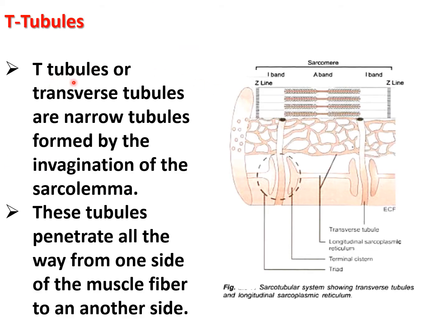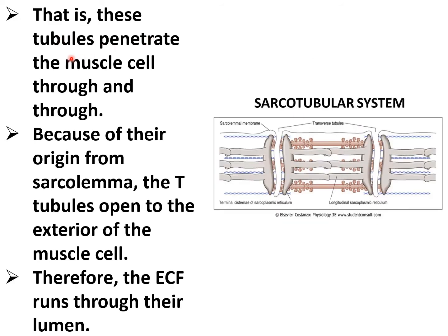T-tubules, or transverse tubules, are narrow tubules formed by invagination of the sarcolemma. These tubules penetrate all the way from one side of the muscle fiber to the other, present throughout the thickness of the muscle fiber. Because of their origin from the sarcolemma, the T-tubules open to the exterior of the muscle cell, and therefore extracellular fluid runs through their lumen.